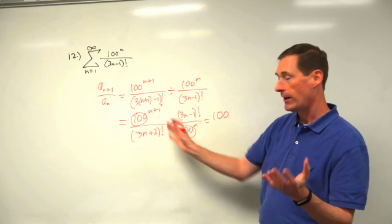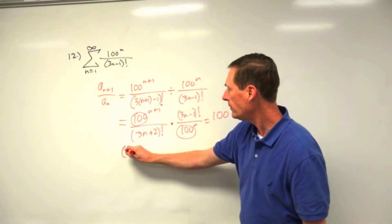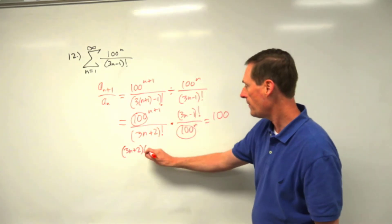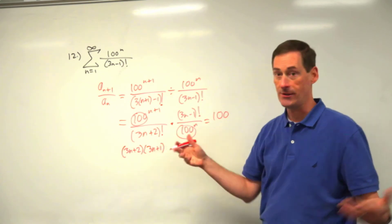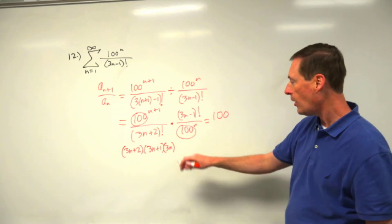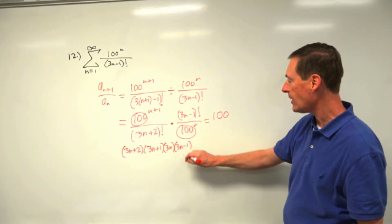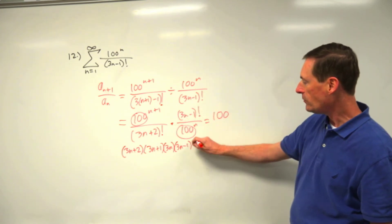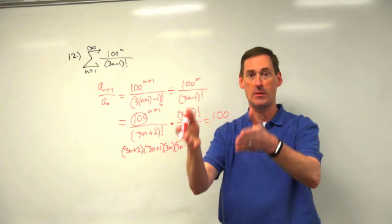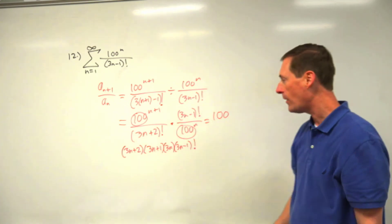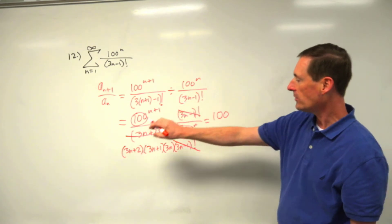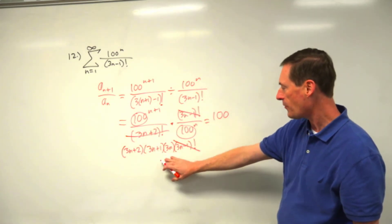For factorials, pick the bigger one — (3n plus 2) factorial. That is composed of (3n plus 2) times (3n plus 1) times (3n) times (3n minus 1) and so on — a factorial that carries all the way down to times three times two times one. You replace the smaller factorial and cancel, leaving three n plus two, three n plus one, and three n on the bottom.